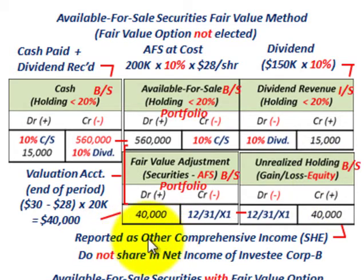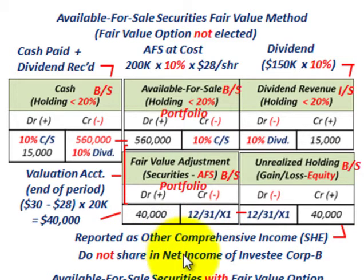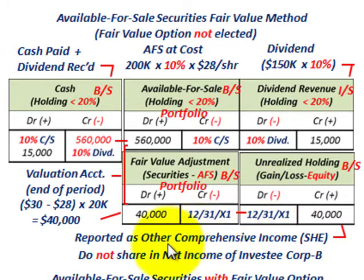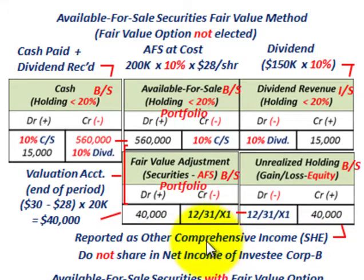The unrealized holding gain is reported as other comprehensive income as a separate item in shareholders' equity. Also note that Corp B had net income of $244,000 for the year, but in either case — fair value method or fair value option — when you hold available-for-sale securities with less than 20% ownership, you do not share in any net income of Corp B. Net income does not figure in here.